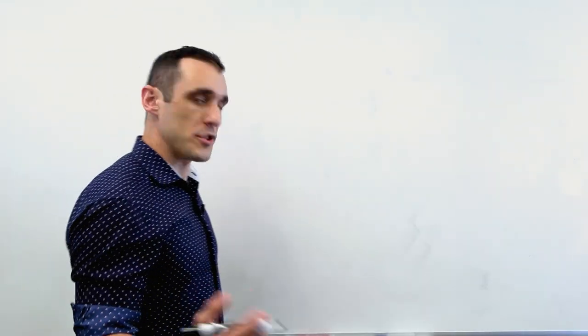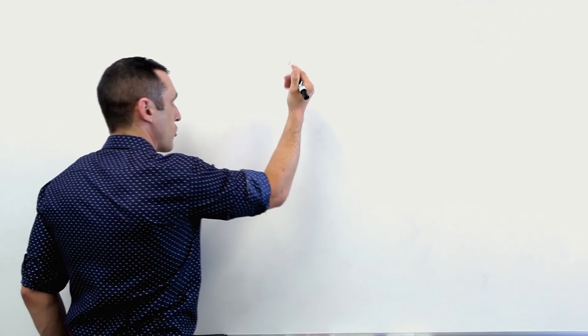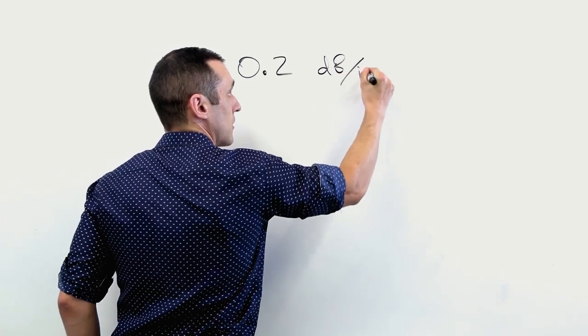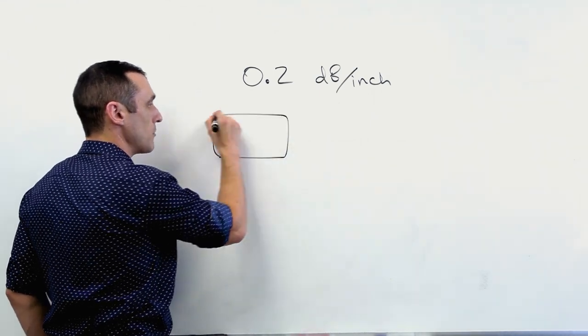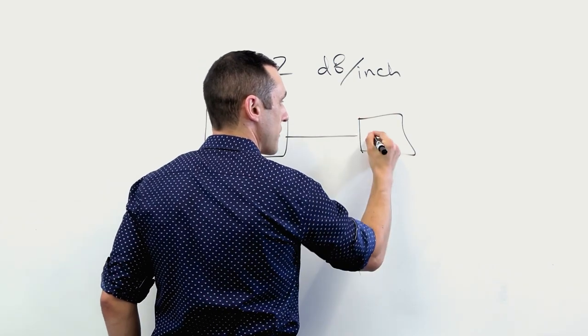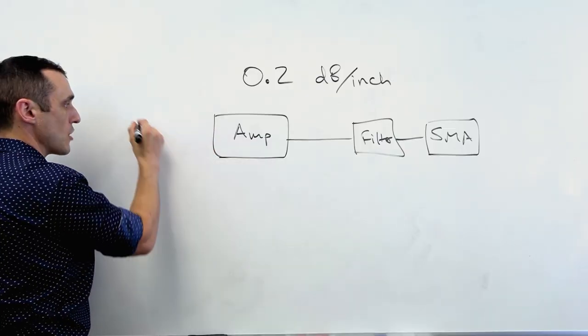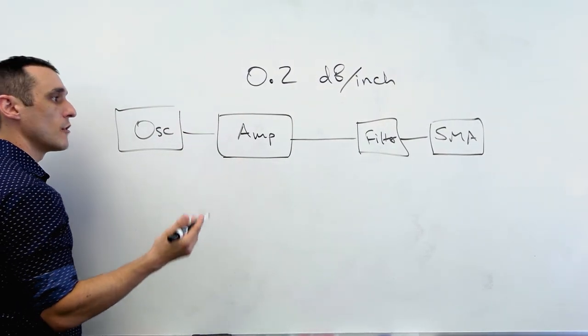So let's just look at an example for particular losses that we might expect in an RF channel. Let's just suppose that you go through the exercise that I've outlined in our earlier types of copper video, and you can actually follow along with that in the video that's linked in the description. Let's say that you've established that your losses in your PCB traces are, let's just say, 0.2 dB per inch. And let's suppose then that you have a channel where you need to route from an amplifier over to a filter and then to maybe an SMA connector. Maybe you have an oscillator over here.